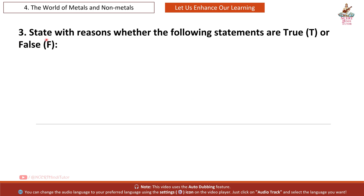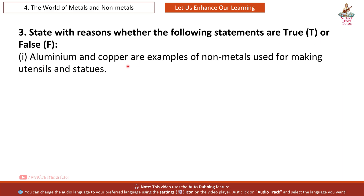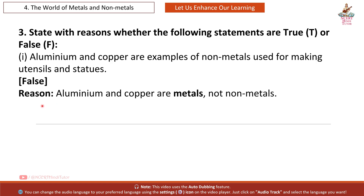Question 3: State with reasons whether the following statements are true or false. First: Aluminium and Copper are examples of non-metals used for making utensils and statues. This is false. Reason: Aluminium and Copper are metals, not non-metals.